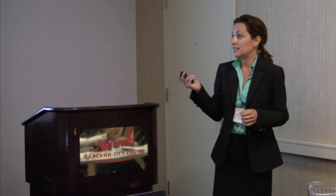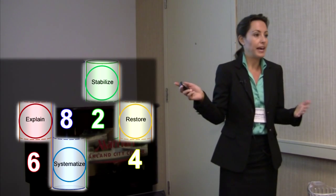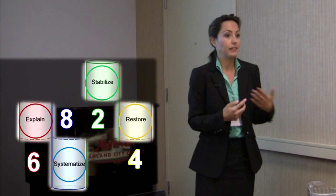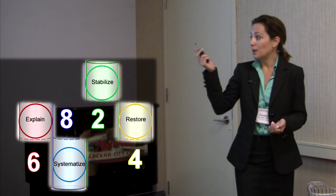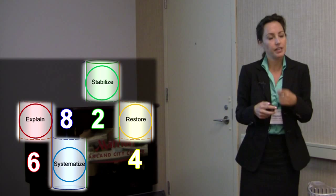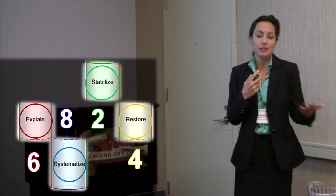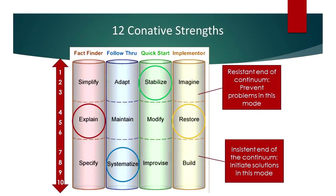For example, my score is a six, eight, two, four. So I initiate solutions through systematizing, planning, and organizing — that's my go-to. I follow that with my six in fact finder by getting enough information to explain what's going on and why I've approached it the way I have. My two in quick start is important because I prevent problems from occurring due to chaos or too much quick starting — I don't solve problems through improvising. But I work with a lot of quick starts and it balances well. This helps me understand as a team member what I bring, and knowing this about my teammates lets me be realistic in my expectations rather than getting frustrated because they're not organized or keep bringing new ideas — I can appreciate those as strengths they bring that I don't have.